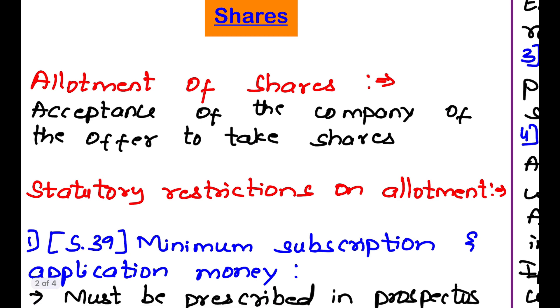Allotment of shares. What do you mean by allotment of shares? It is the acceptance by the company of the offer to take shares. So if a company accepts a shareholder's offer to take shares, then it is called allotment.